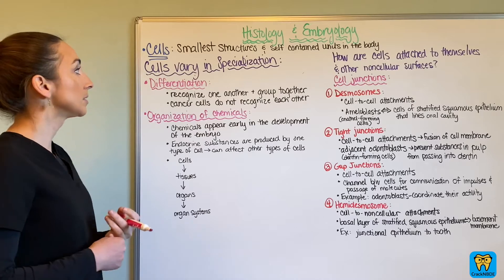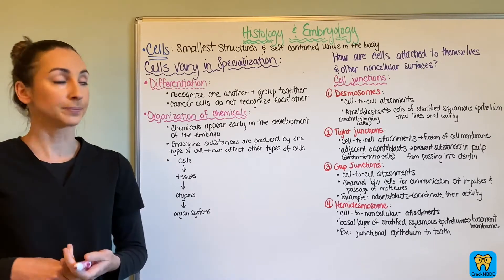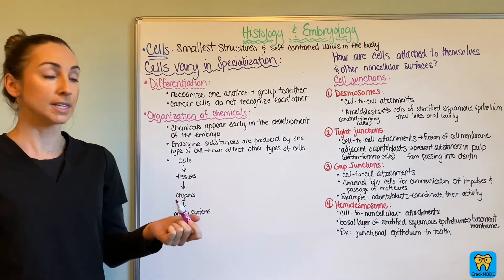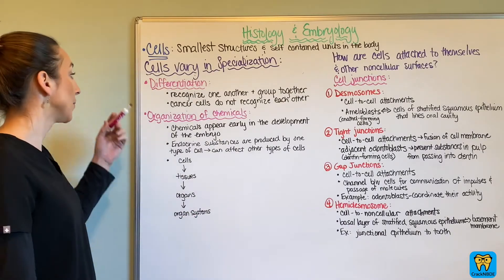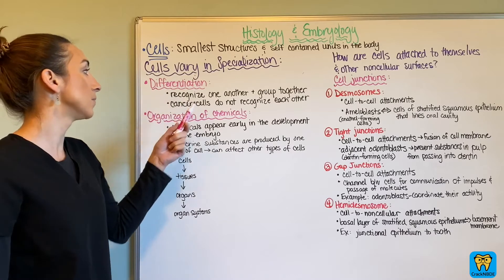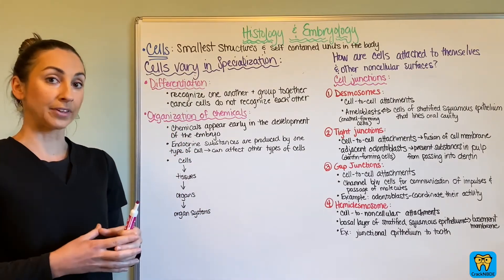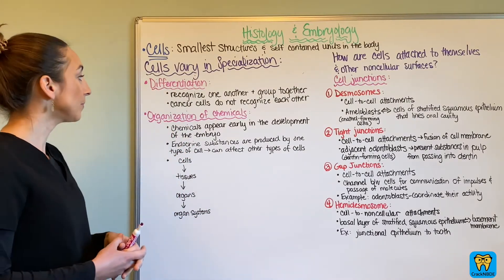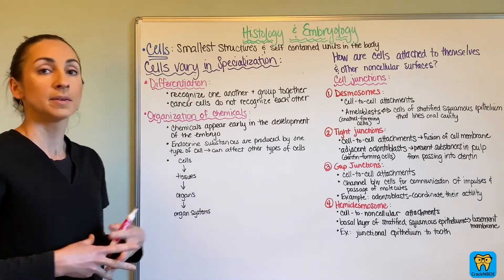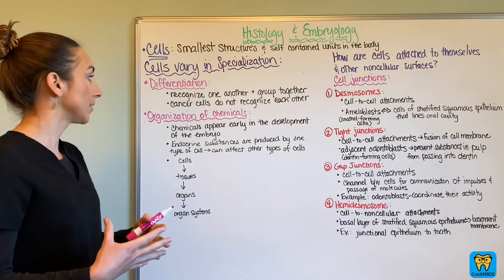Cells are the smallest structures and self-contained units in the body. They can vary in specialization. We have differentiation, which is where one cell recognizes another and they usually group together — it's like they form little parties among each other, because they recognize each other and work well together.